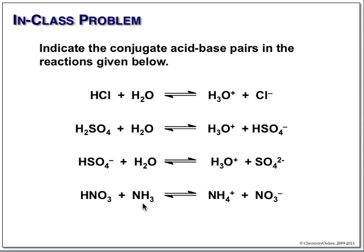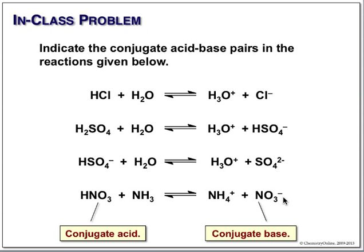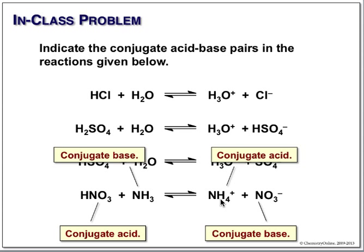Here we have nitric acid dissolved in liquid ammonia. Liquid ammonia can promote ionization — it's not as good as water, but it works. Nitric acid is our Bronsted acid, and its conjugate base is nitrate anion. Let's also look at the role of ammonia here: ammonia is functioning as a Bronsted base that is accepting a proton, so its conjugate acid is ammonium. In the reverse reaction, the conjugate acid is ammonium and its conjugate base is ammonia. Similarly, up here, water is the Bronsted base and its conjugate acid is hydronium.